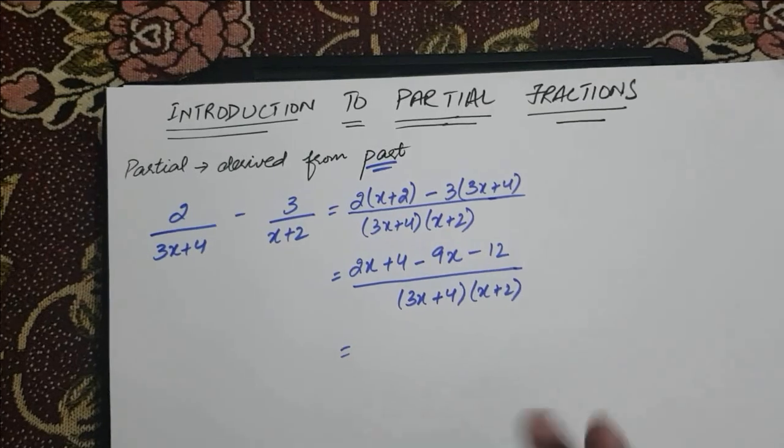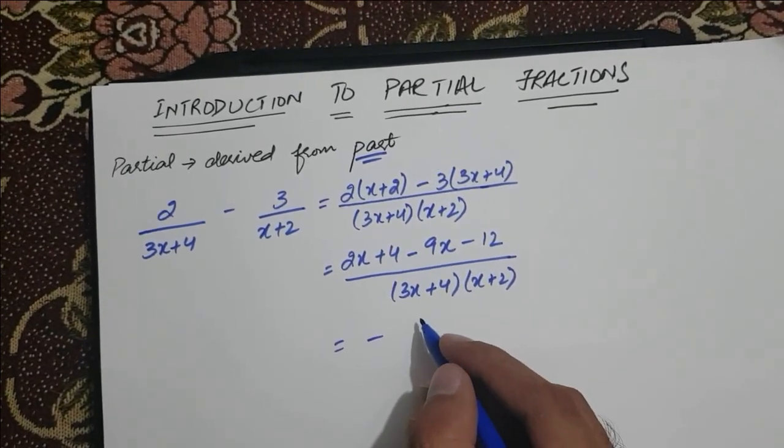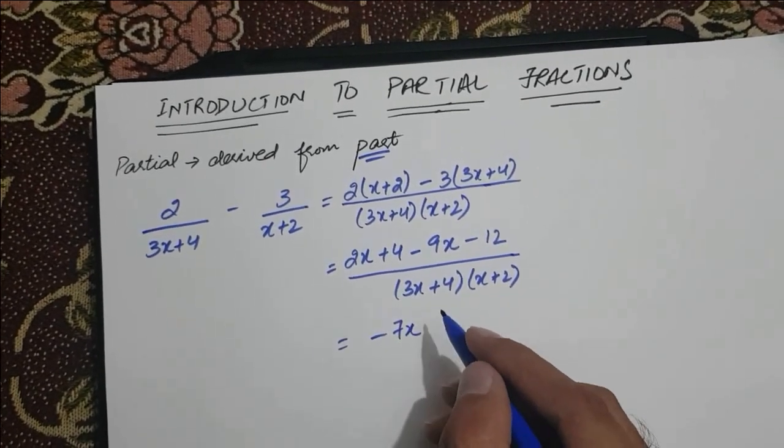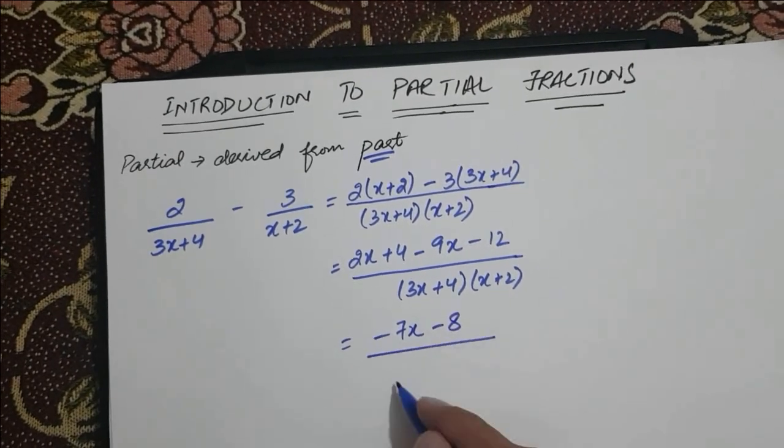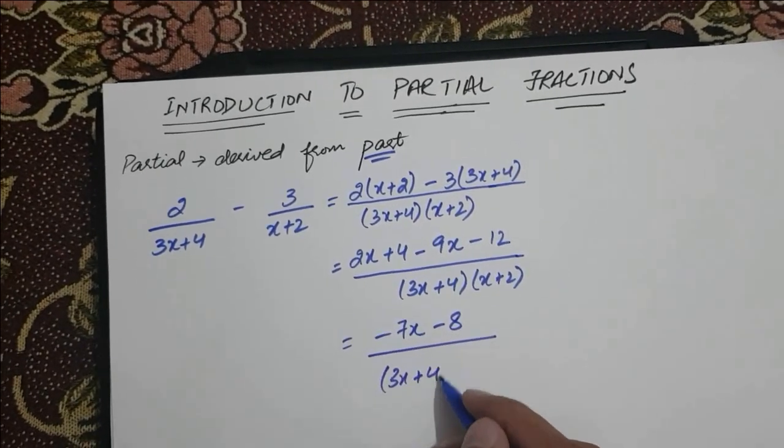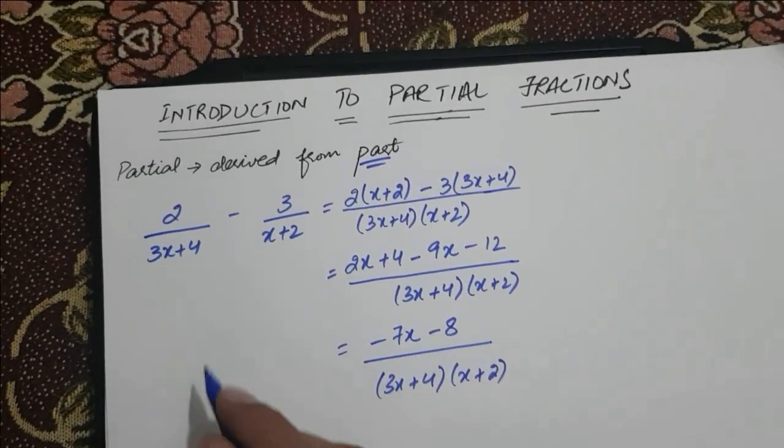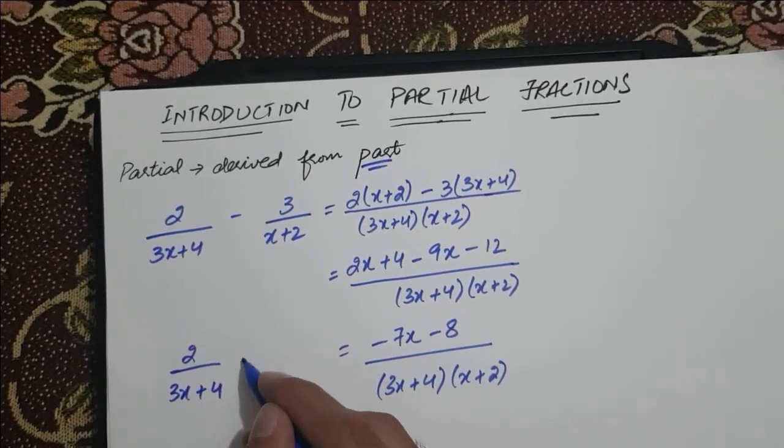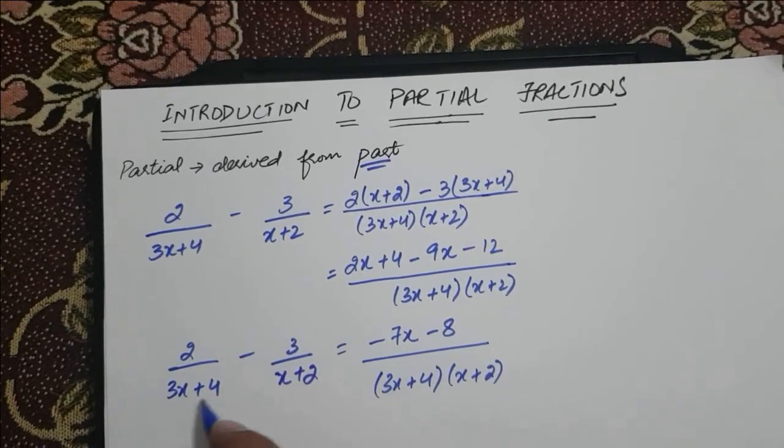Further solving, we get 2x minus 9x equals minus 7x, plus 4 minus 12, we get minus 8 over 3x plus 4 into x plus 2. So this is the solution to the problem 2 over 3x plus 4 minus 3 over x plus 2.